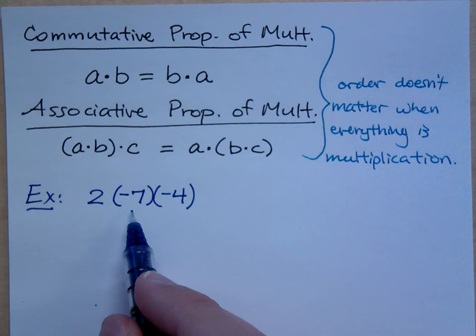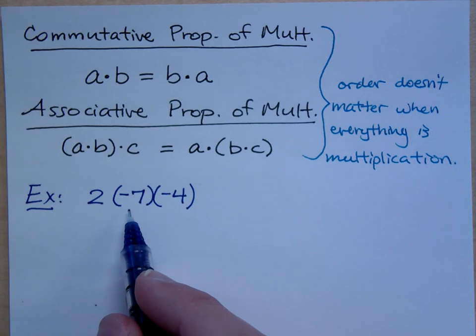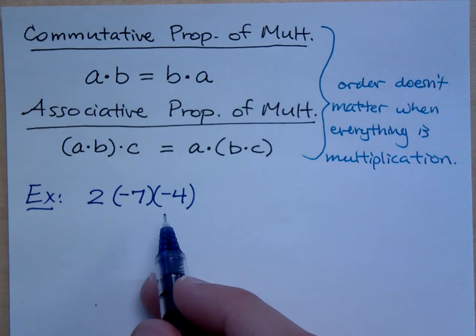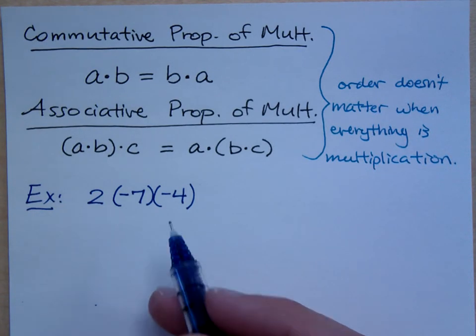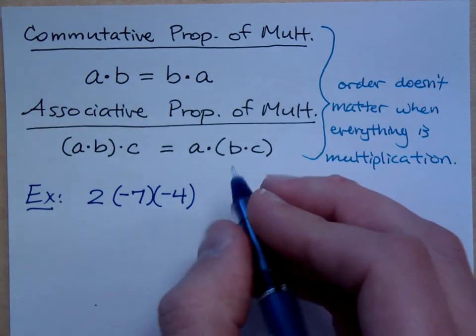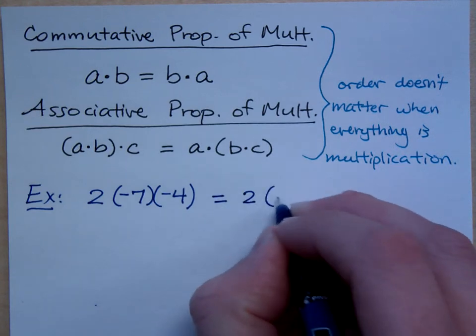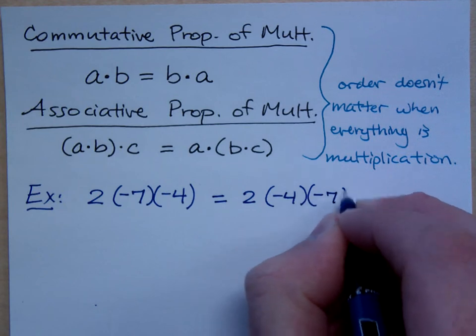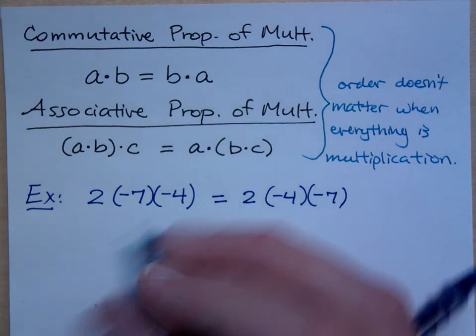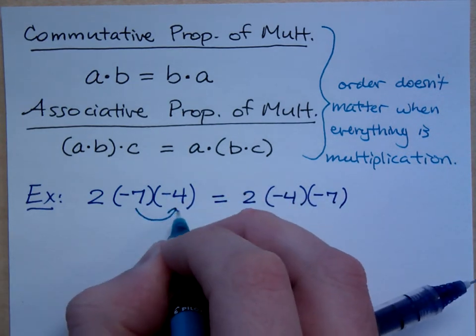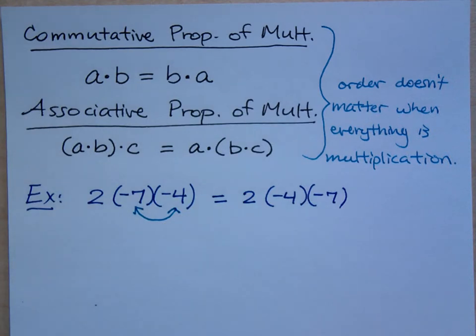Now you could do 2 times 7, or 2 times negative 7, and we got negative 14 the first time, right? But then maybe I don't know 14 times 4. But here's what I can do. I can rearrange this. I could say 2 times negative 4 times negative 7, just by swapping these two factors. Because we said multiplication, the order doesn't matter, right?